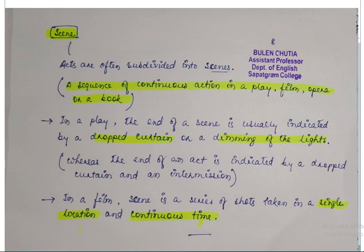Whereas the end of an act is indicated by dropped curtain and an intermission. A longer break is taken after an act, but after a scene the break is not taken, just a temporary, transitory break is taken. In film, scene is a series of shots taken in a single location and a continuous time. That is, to become a scene, the location should not be changed. The time should also be a continuous time. There should not be any kind of pause in between.